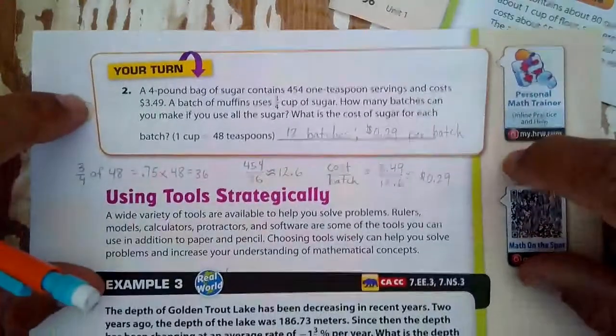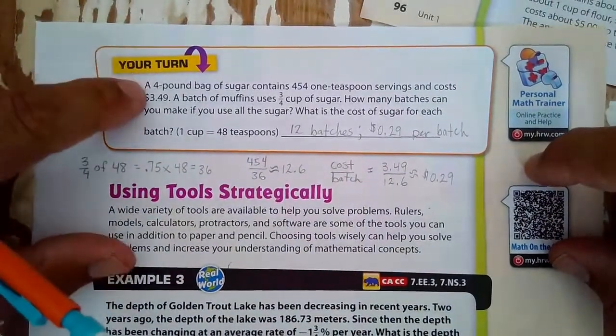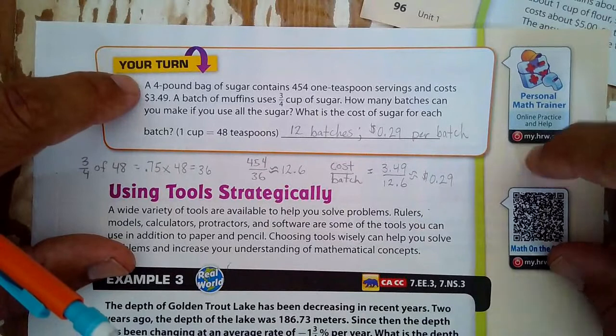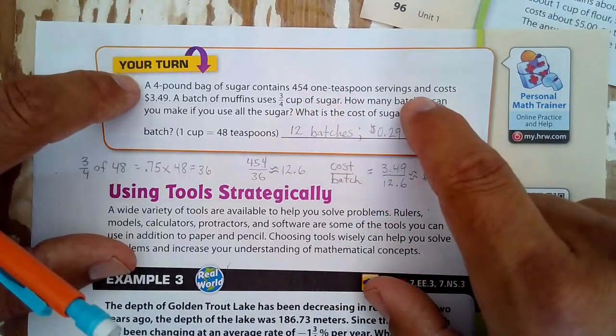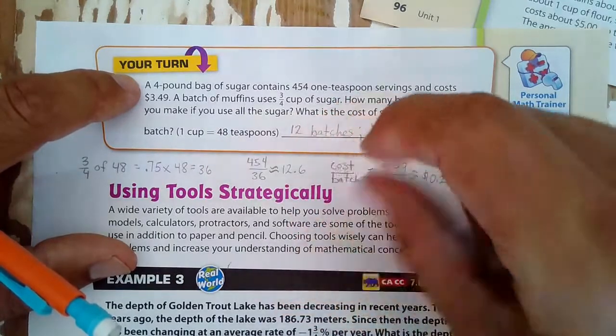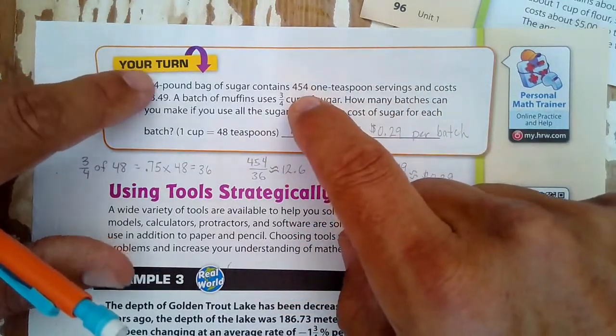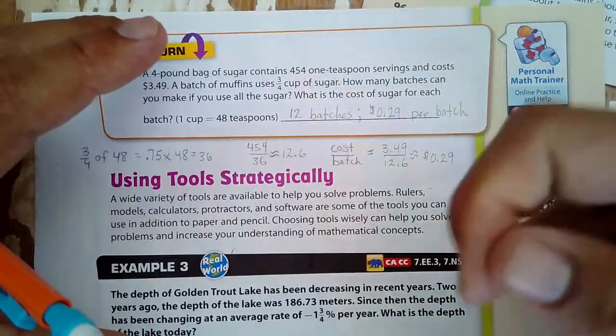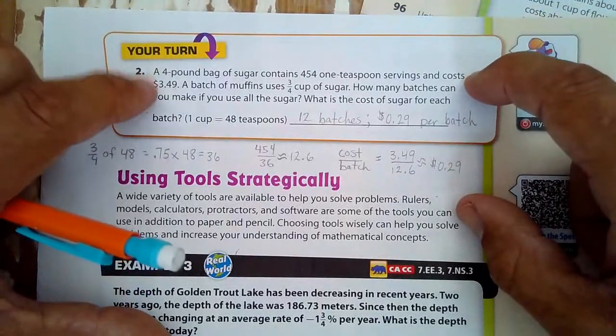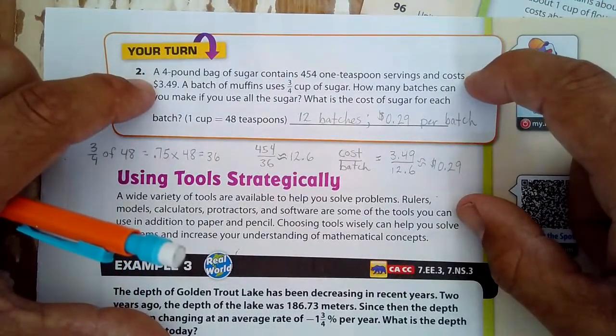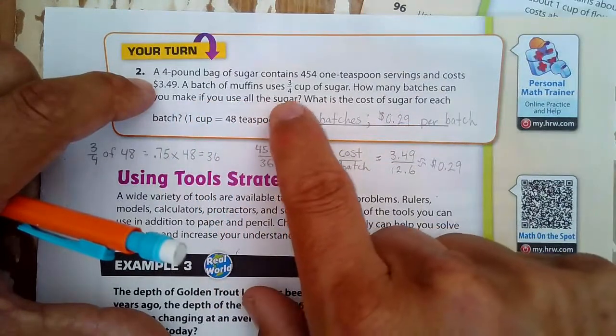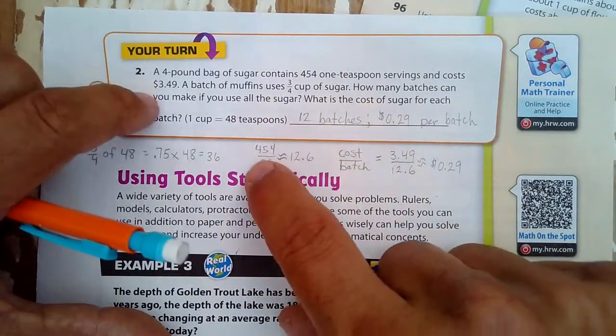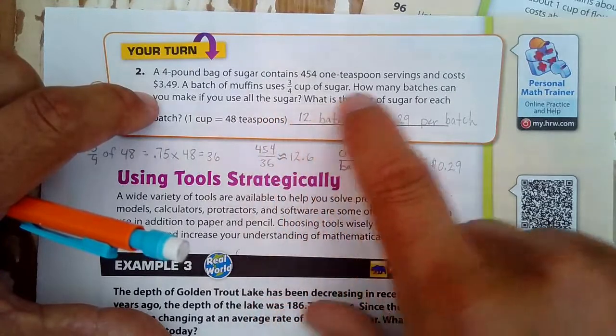So we're going to go on to this similar problem on page 97. A four pound bag of sugar contains 454 teaspoon servings and that four pound bag costs $3.49. A batch of muffins uses 3/4 cup of sugar. How many batches can you make if you use all the sugar? What is the cost of each batch?